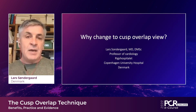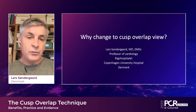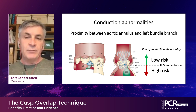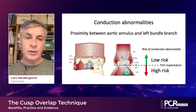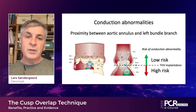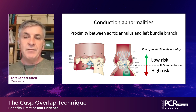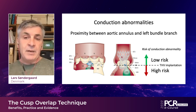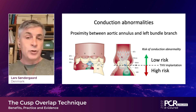So before we start, maybe I should spend a few minutes to talk about why to use this cusp overlap technique. We all know that patients who are going for transcatheter aortic valve replacement instead of surgical aortic valve replacement have a higher risk of conduction abnormality. The reason is that there's a very close proximity between the aortic annulus and the left bundle branch. So if you go deep with your valve implant, you're going to have a high risk of conduction abnormality and need for a new permanent pacemaker. On the other hand, if you can implant higher, you have a much lower rate.